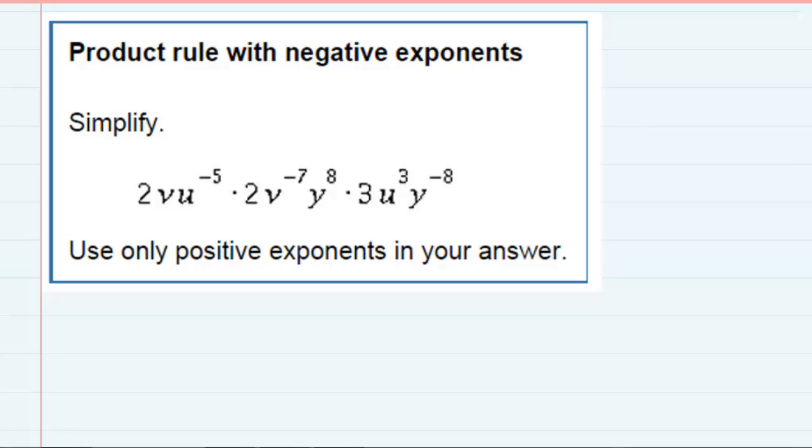Product rule with negative exponents. We said earlier that the product rule is that whenever you have a base being raised to an exponent and you multiply it with the same base being raised to an exponent, we can combine those bases and then add the exponents.